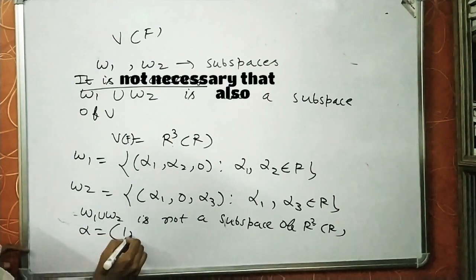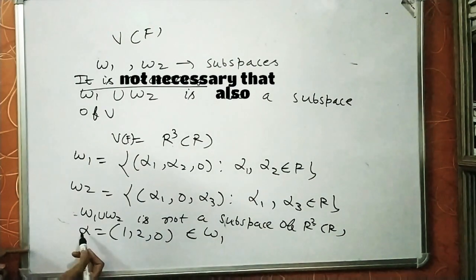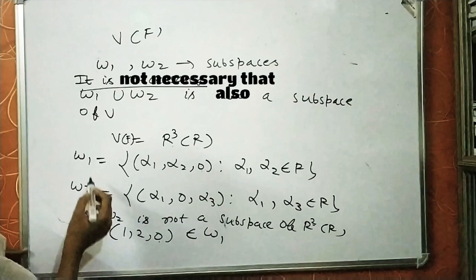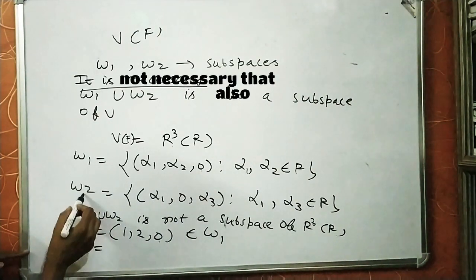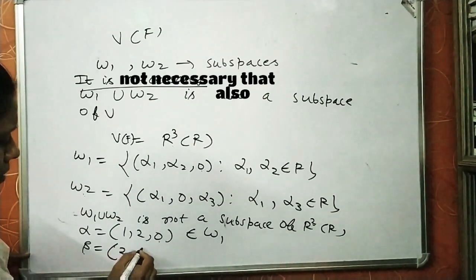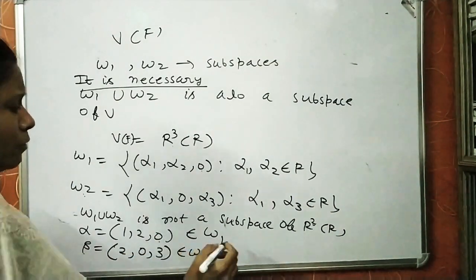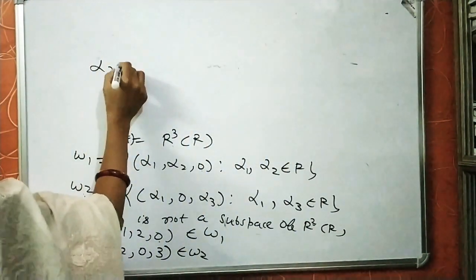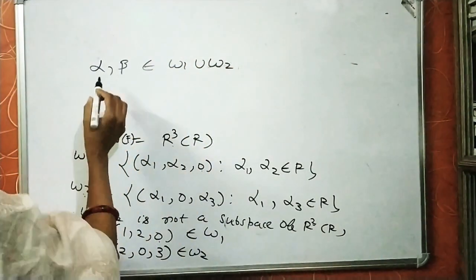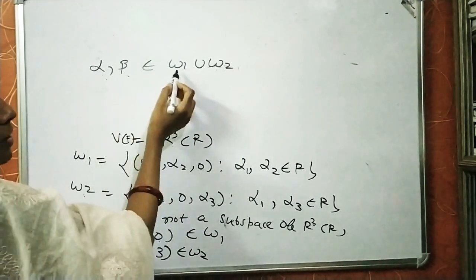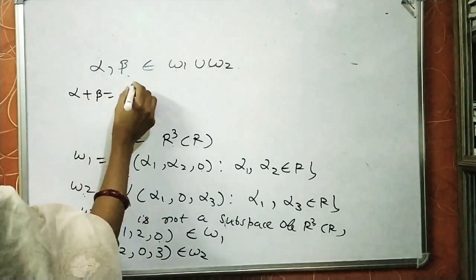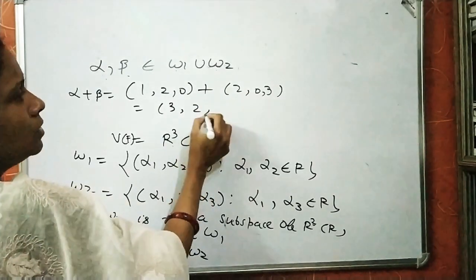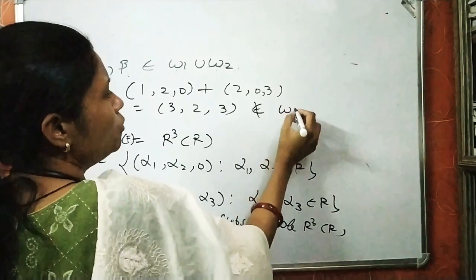Let alpha = (1, 2, 0) be an element in W1, because it is a triplet of real numbers whose third element is 0, so it belongs to W1. Let beta = (2, 0, 3) be an element in subspace W2. Now, alpha and beta both belong to W1 union W2 — alpha is in W1 and beta is in W2, so both are present in the union. We compute alpha + beta = (1, 2, 0) + (2, 0, 3) = (3, 2, 3).